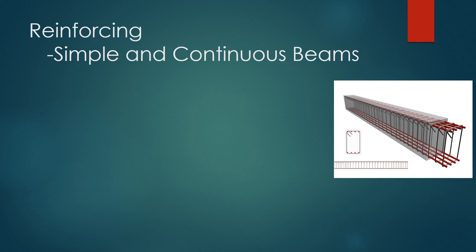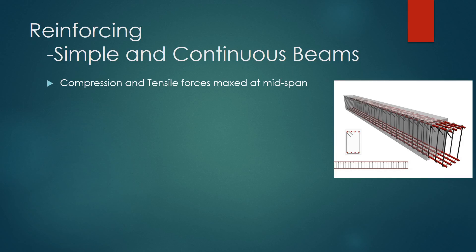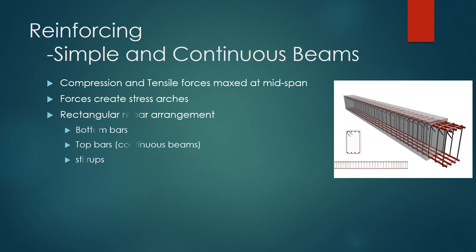Reinforcing in simple and continuous concrete beams: compression and tensile forces in a concrete beam reach their max in the middle. In a perfect world, the best way to control stress would be to place reinforcement that follows the stress arches. Instead, a rectangular arrangement is used as a substitute, consisting of bottom bars hooked at each end and stirrups which loop around the bottom bars. Bars are held up in place by chairs and wire. In a continuous concrete beam, top bars are used over supports, and stirrups are still used.